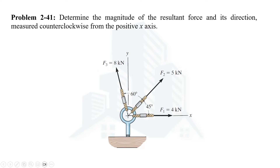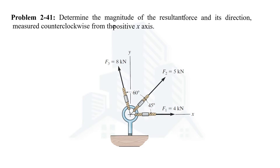Welcome everyone. In this video we are going to solve problem number 41 from the second chapter, the Force Factors, from the book Engineering Mechanics: Statics by RC Hibbeler. In this problem we are being asked to determine the magnitude of the resultant force and also the direction, measured counterclockwise from the positive x-axis. Let's solve this problem.